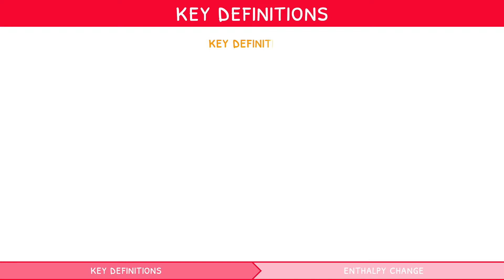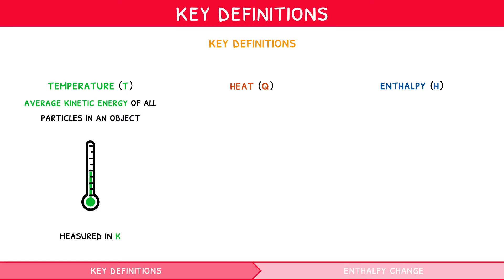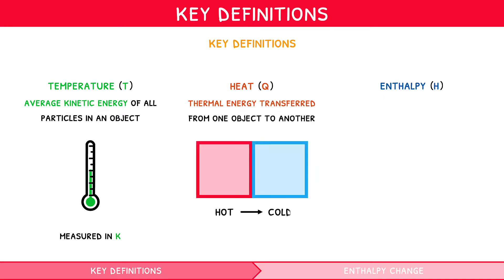The first three definitions are temperature, heat, and enthalpy. Temperature, denoted by T, is a measure of the average kinetic energy of all particles in an object, measured in Kelvin. Heat, denoted by Q, is the thermal energy transferred from one object to another, naturally flowing from hot objects to cold objects, measured in joules.